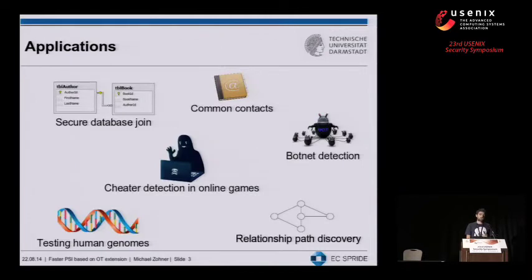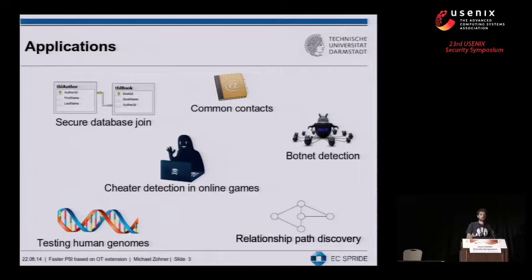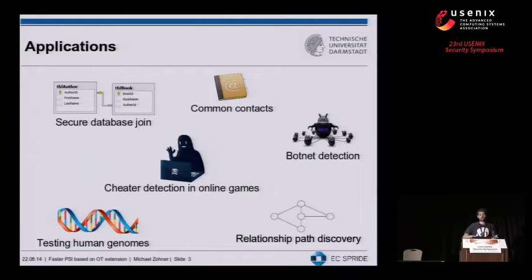There are actually a lot of applications out there that have been tackled in research. The first very natural one is secure database join, where two companies want to combine their customer databases to improve their service without leaking which customers they have. On the other side, you have common contacts, where two people want to find out who they both know. And there are completely different applications like botnet detection, Tor detection, online games, testing human genomes, and relationship path discovery in social networks.